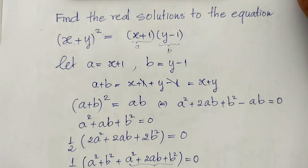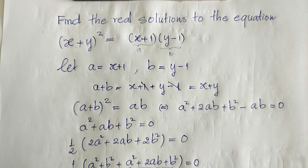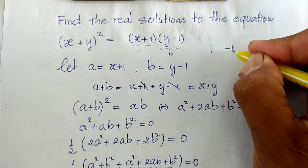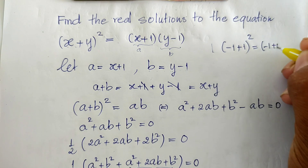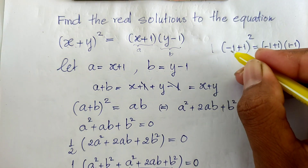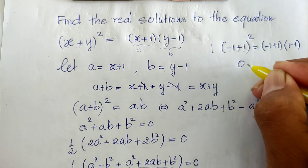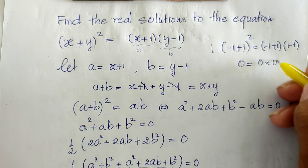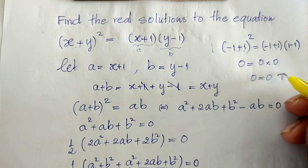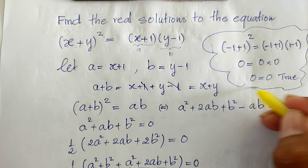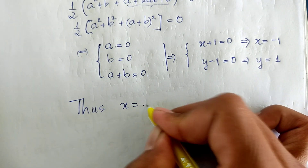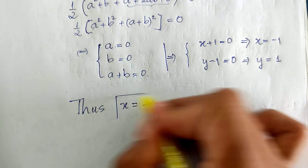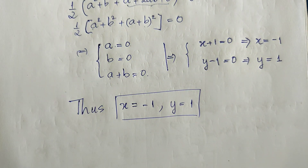Now let's verify: substituting h equals minus 1 and y equals 1, the left side is (minus 1 plus 1) squared equals 0 squared equals 0. The right side is (minus 1 plus 1) times (1 minus 1) equals 0 times 0 equals 0. So 0 equals 0 — true! This verifies our equation. Thus h equals minus 1 and y equals 1 is our solution. Thank you for watching — please don't forget to subscribe to my channel for more exciting videos. Goodbye!